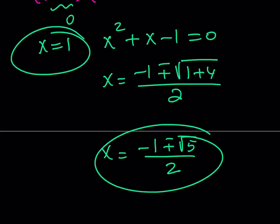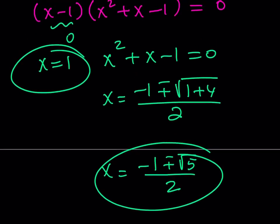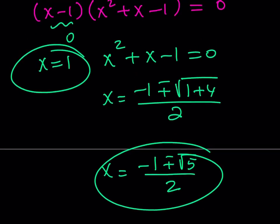X equals 1. X equals negative 1 plus minus root 5 over 2. And this brings us to the end of this video. Thank you for watching. I hope you enjoyed it. Please let me know. Like, comment, and subscribe. I'll see you tomorrow with another video. Until then, be safe, take care, and bye-bye.